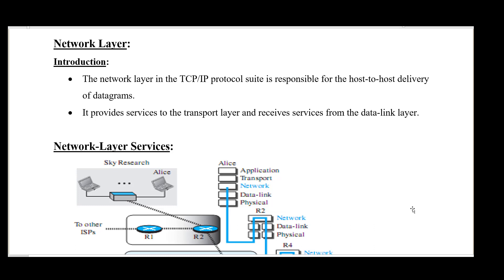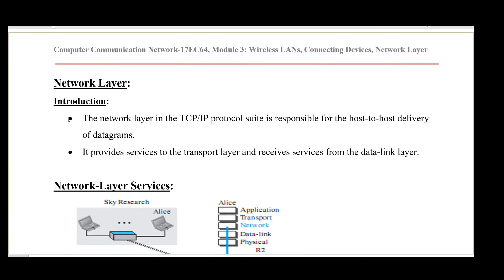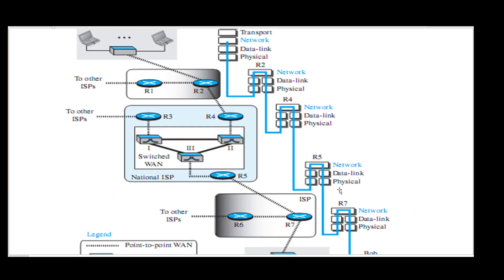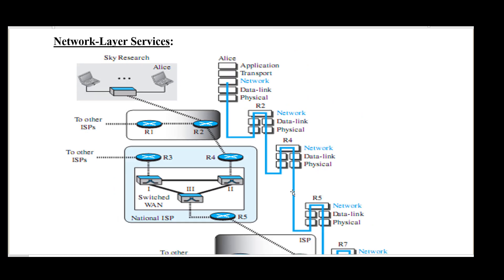Let us today learn about the network layer. We have seven layers: physical layer, data link layer, network layer, transport layer, and application layer. Network layer falls just below the transport layer and above the data link layer. It receives service from the data link layer and provides service to the transport layer.